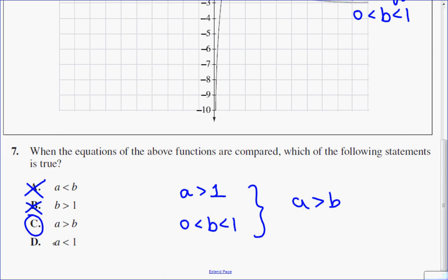Now let's look at option d, why it's not. It said a is less than 1, but we know since it's increasing, a has to be greater than 1. So the answer to number 7 is c.